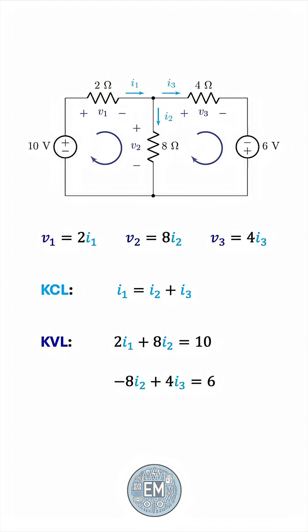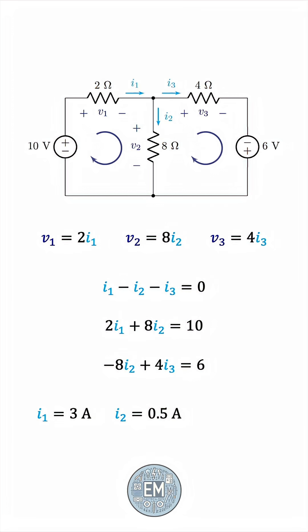So KCL and KVL, coupled with Ohm's law, give us a system of three equations with three unknowns. Let's perhaps take I2 and I3 to the other side, so that it has the typical form of a linear system, and now we can solve it using substitution, elimination, or any other linear algebra method. We get I1 equals 3, I2 equals 0.5, and I3 equals 2.5 A.